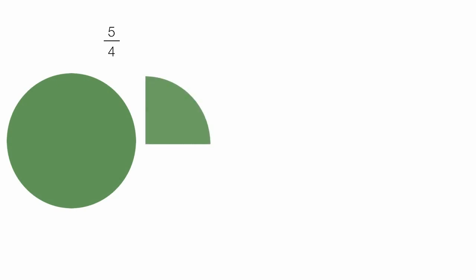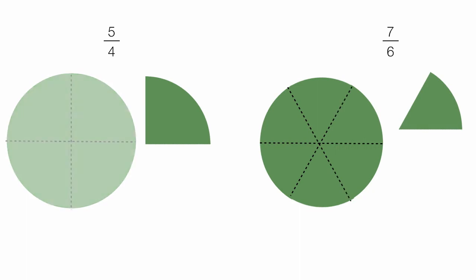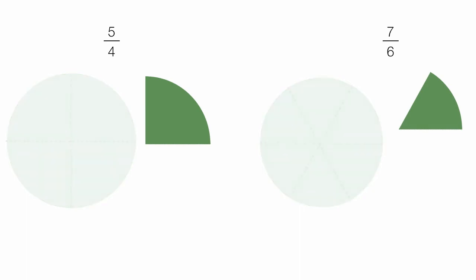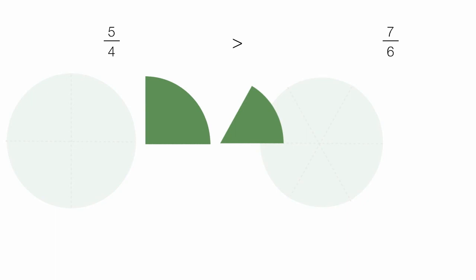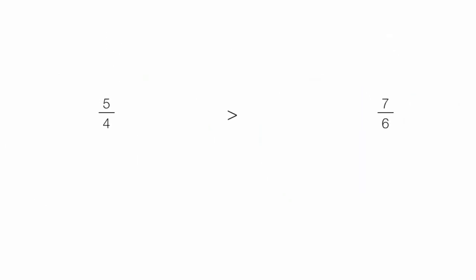Now if I take these two, 5 fourths — where I took the circle and put it into 4 pieces — and 7 sixths, where I took a circle and cut it into 6 different pieces, this really leaves me with the comparison of what's different, which is those two extra pieces. And clearly, 1 fourth is greater than 1 sixth. So it turns out that 5 fourths is greater than 7 sixths. And that's the answer to the question.